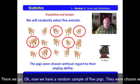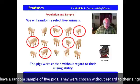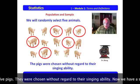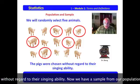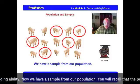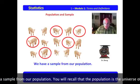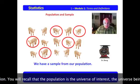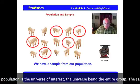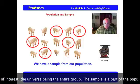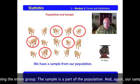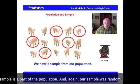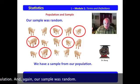Oh, now we have a random sample of five pigs. They were chosen without regard to their singing ability. Now, we have a sample from our population. You will recall the population is the universe of interest, the universe being the entire group. The sample is a part of the population. And again, our sample was random.